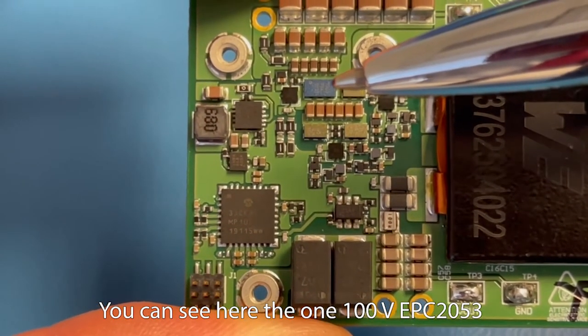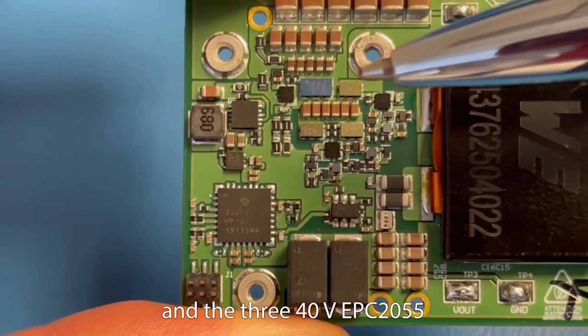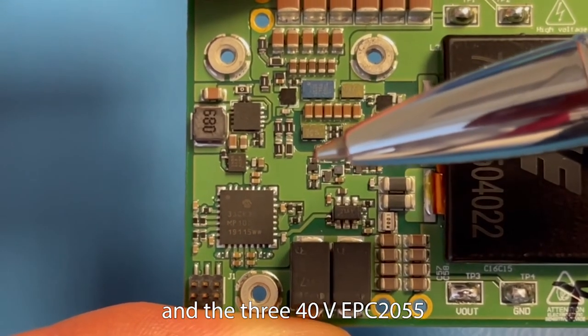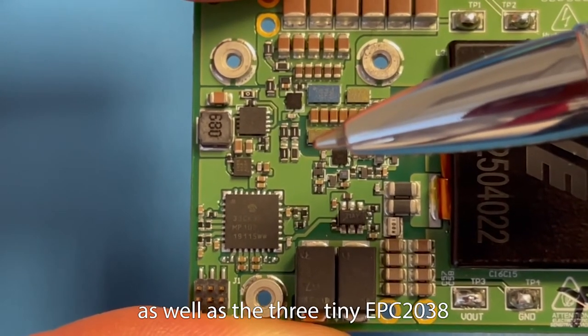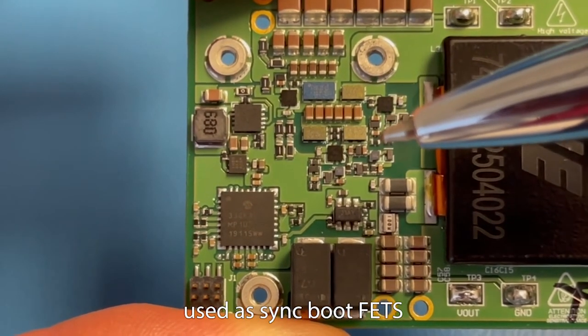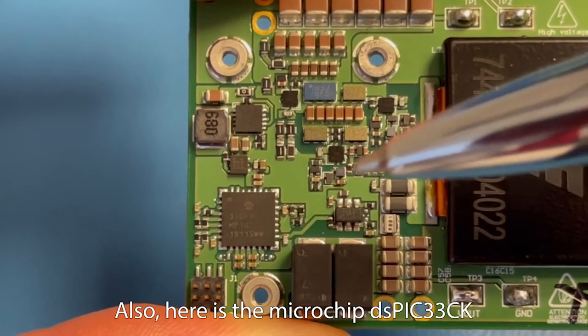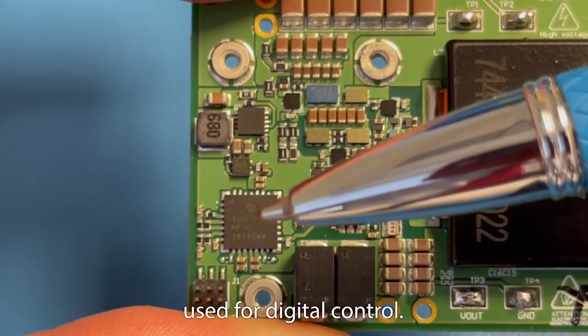You can see here the one 100 volt EPC-2053 and the three 40 volt EPC-2055s used in the 3-level buck converter, as well as the three tiny EPC-2038 used as sync boot FETs. Also here is the microchip DSPIC33CK used for digital control.